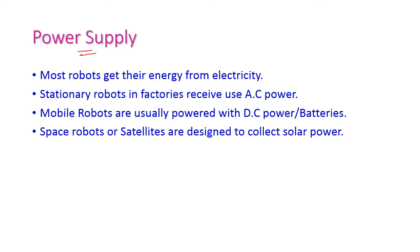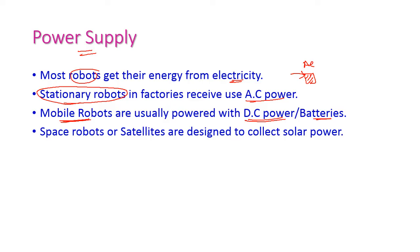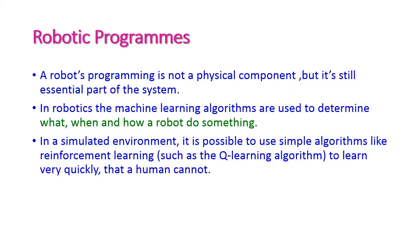The next component is power supply. The main power sources for robots are electricity in two forms: AC power and DC power. AC power is given to stationary robots fixed in a particular place. For mobile robots, DC power or battery power is used since AC current cannot be supplied while moving. For space robots or satellites, solar power is used — the robot gets its energy from the sun.